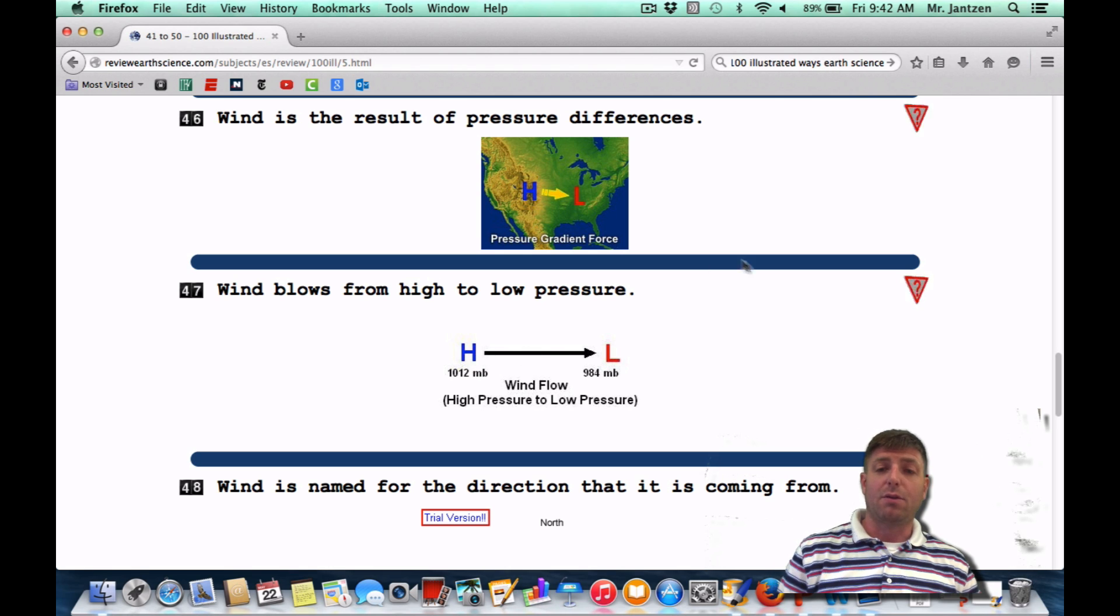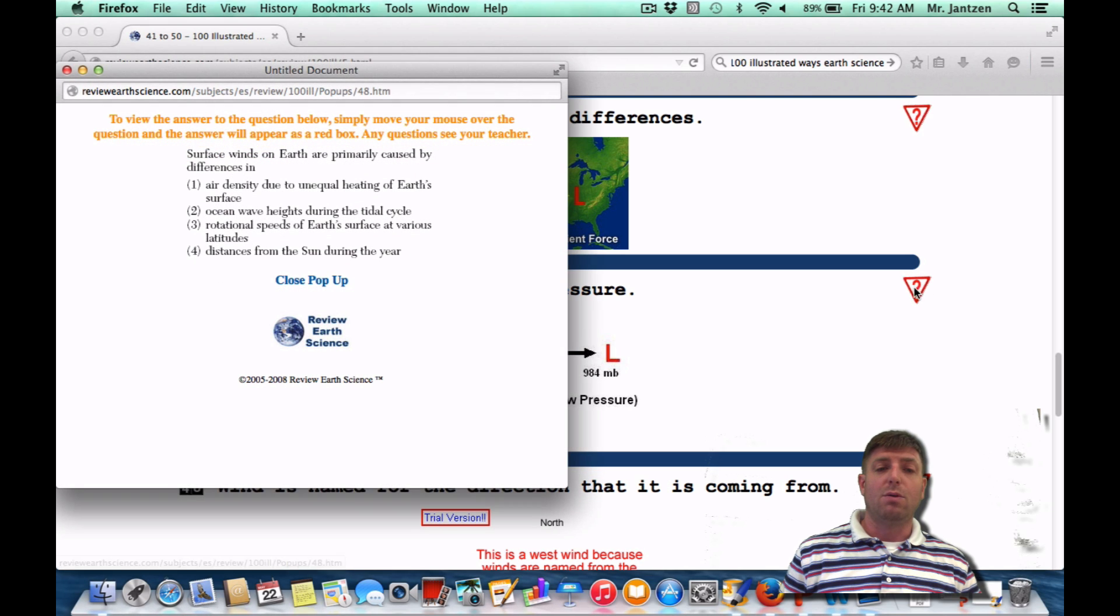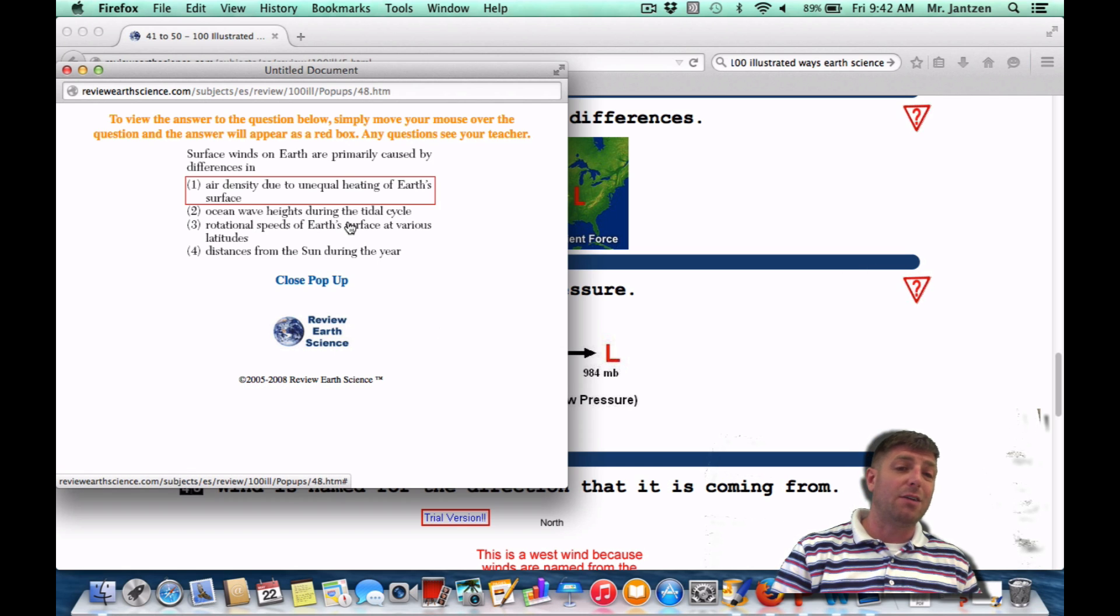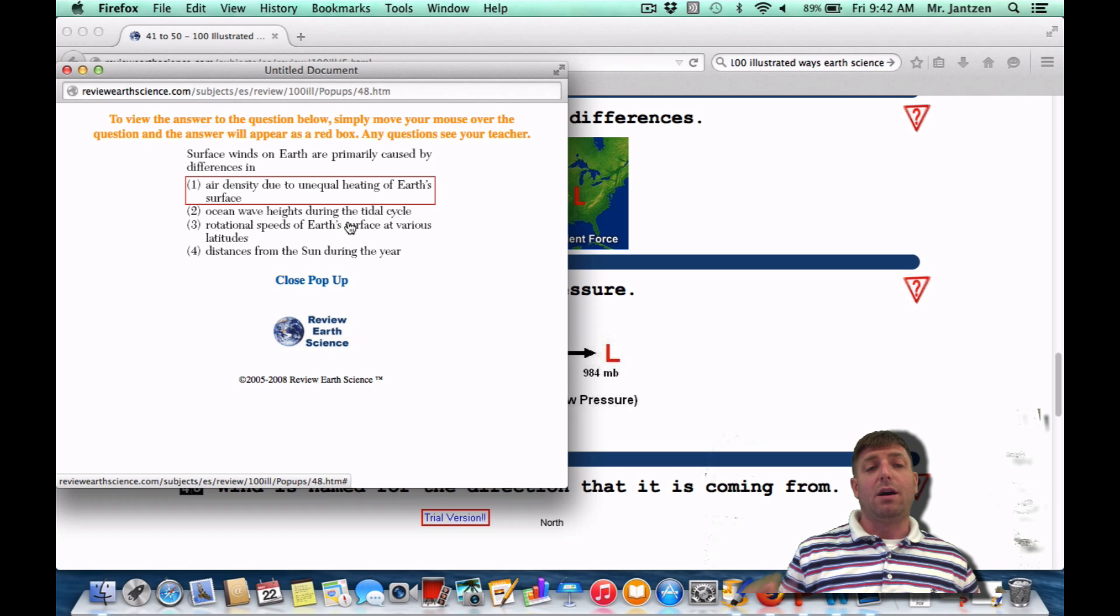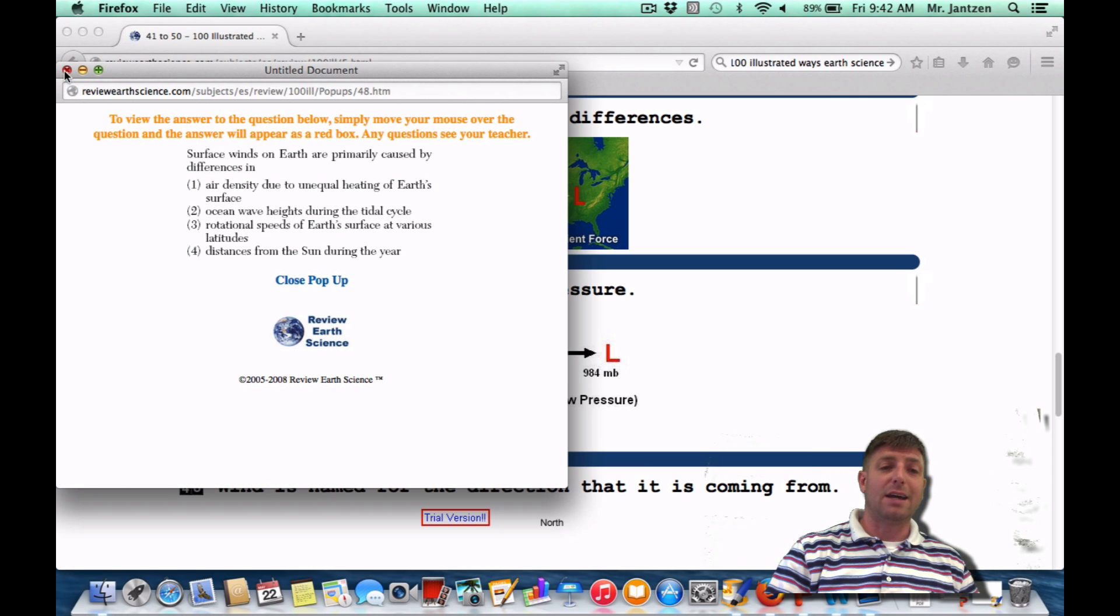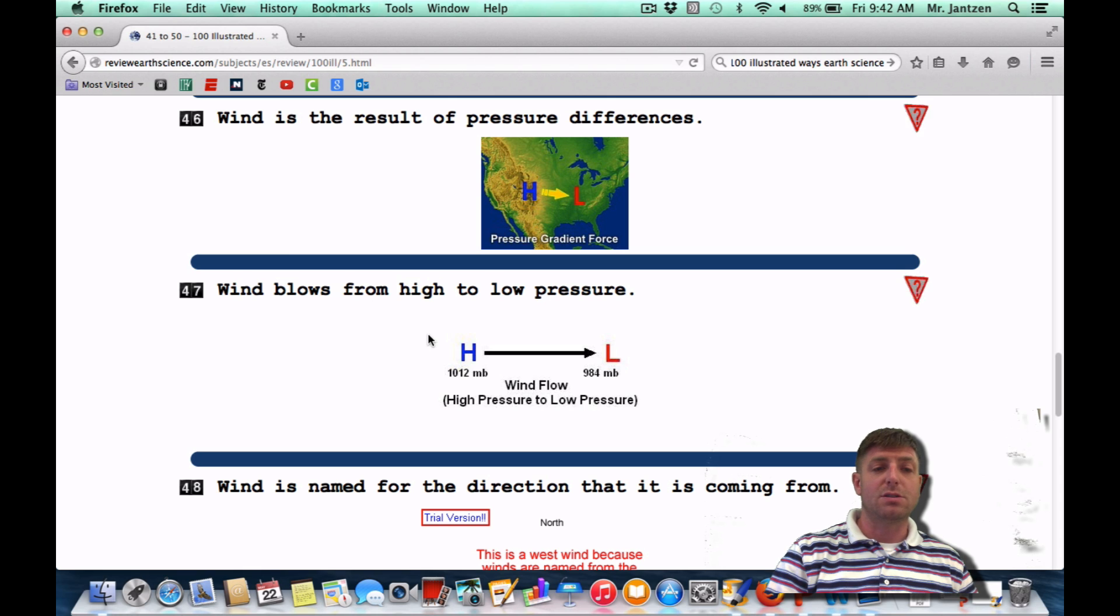So number 47, what we're talking about here with regards to the region's question: surface winds on earth are primarily caused by differences in what? Winds are going to be due to differences in air density or air pressure, however you want to put it. They're saying air density here due to unequal heating of the earth's surface. Unequal heating of the earth's surface, we're talking about water has a high specific heat, so it takes a long time to heat up. Land a little lower, so it's going to heat up a little quickly. That unequal heating is going to cause your surface winds.